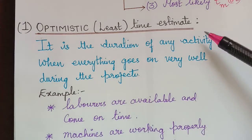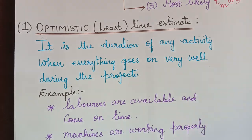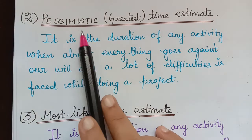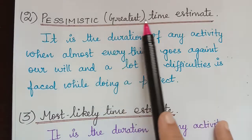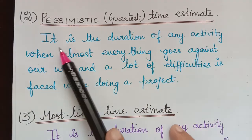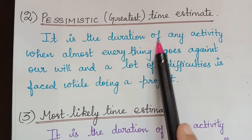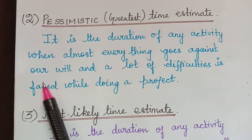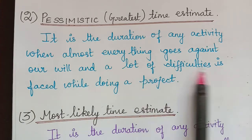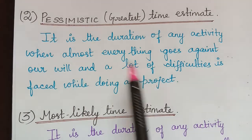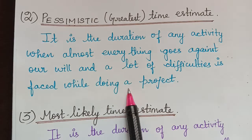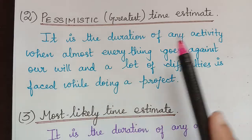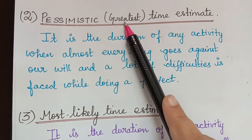This is the optimistic time estimate. Next, we shall see what is the pessimistic time estimate. The pessimistic time estimate is also known as greatest time estimate. It is the duration of any activity when almost everything goes against our will and a lot of difficulties are faced while doing the project. When lots of difficulties are faced, obviously the time taken to complete the project will become higher and higher, so it becomes the greatest.